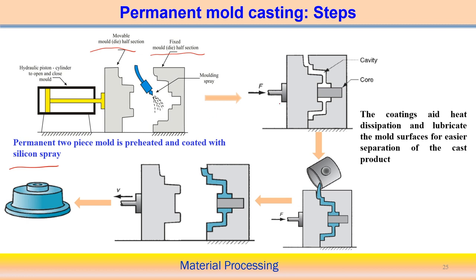We can also insert a core for hollow sections. Then the liquid metal is poured to fill the mold cavity. Once solidified, the cast component is removed by moving the mold in the other direction. Complex shapes can be easily produced using these steps. The coating helps control heat dissipation rate, acts as a lubricant between mold surfaces, and helps with easy separation of the component after casting.